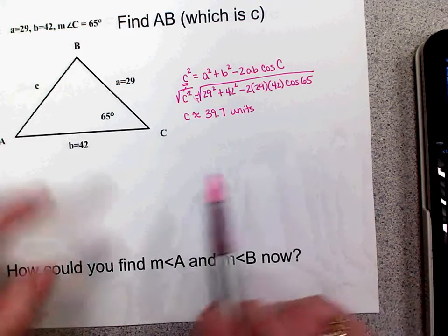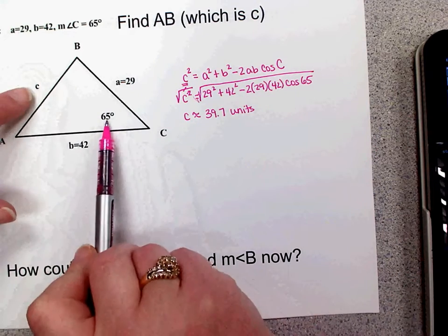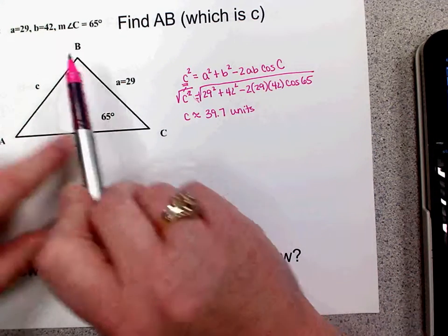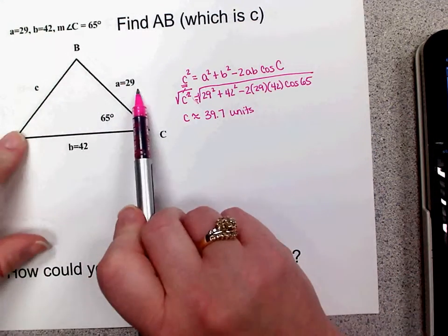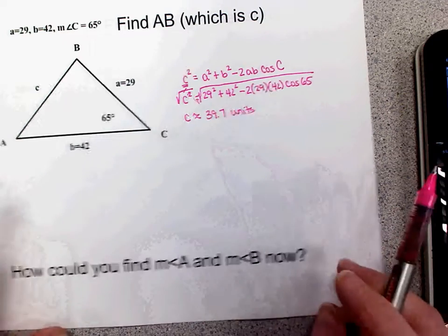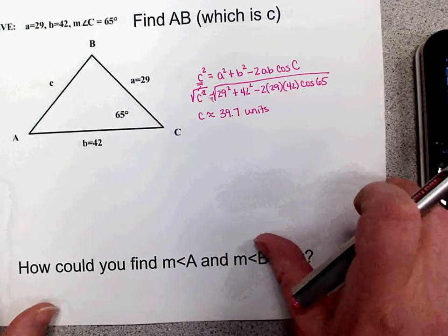Remember, we could not use the law of sines here because we did not know an opposite angle and side pair — that's why we used the law of cosines.